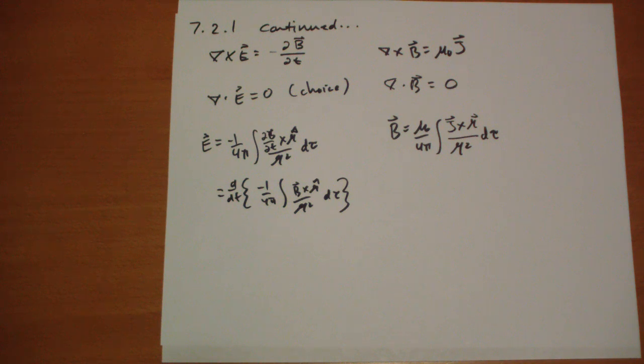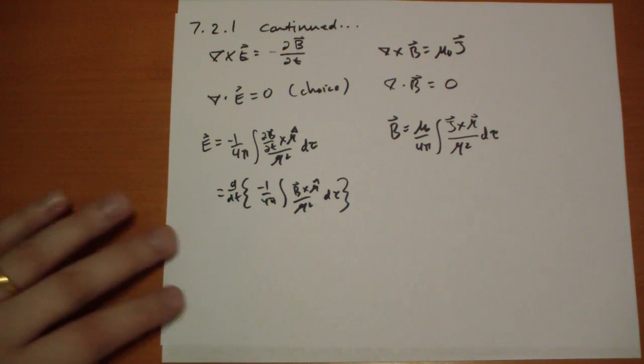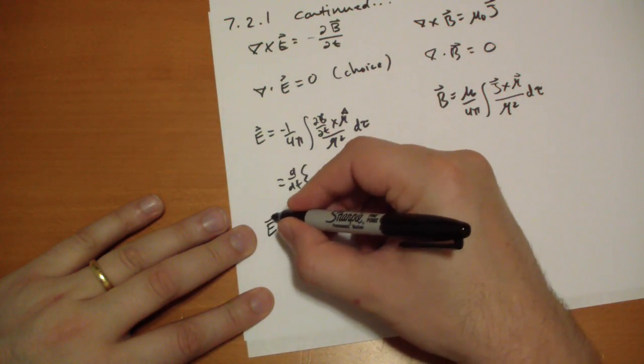Well, B cross r, this should appear actually familiar to you as the A vector, right? The magnetic vector potential.